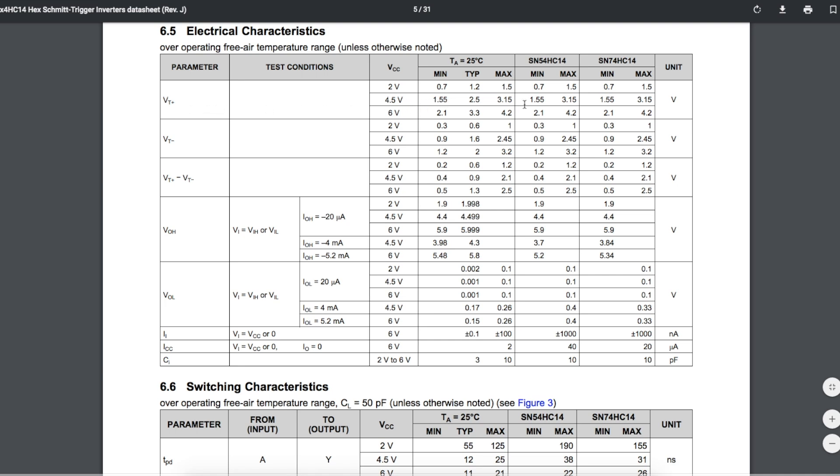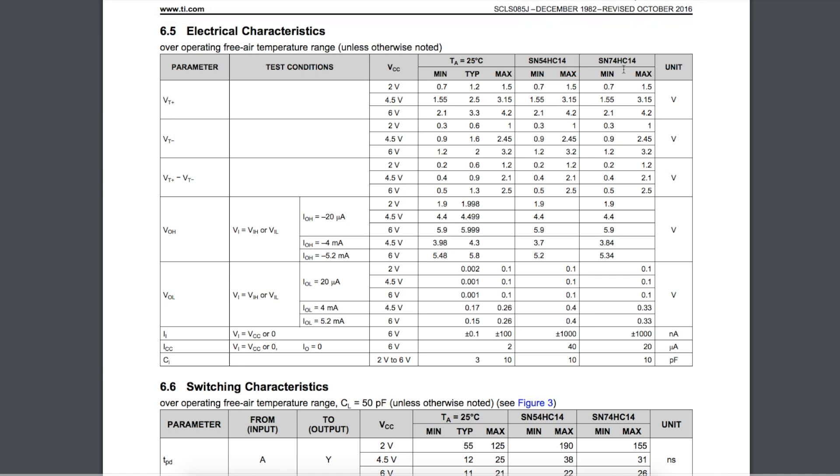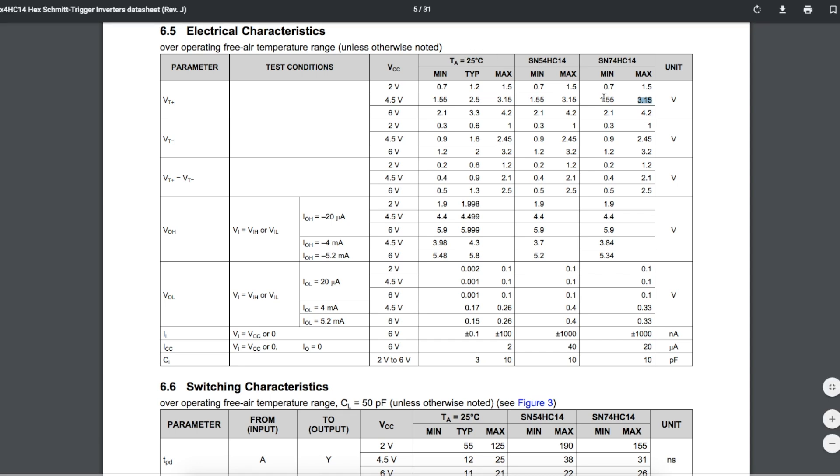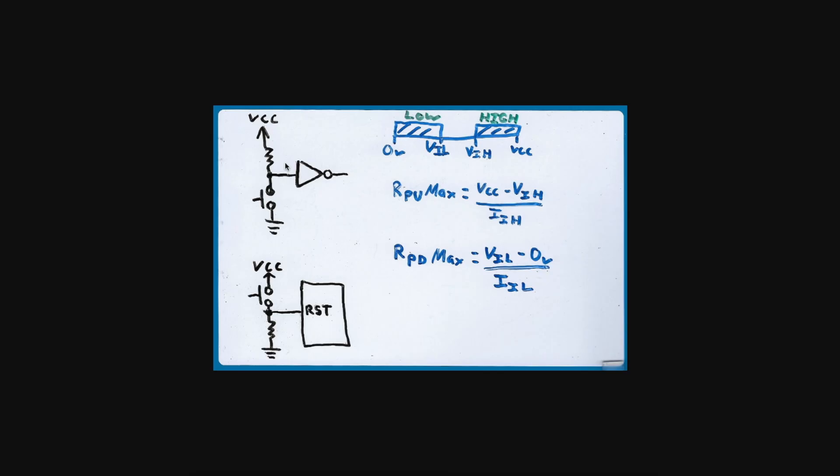the voltage level that will recognize as a guaranteed logic high for 74HC would be 3.15 volts. Depending on the part and depending on the operating temperature, an input that is 1.55 volts may register as a logic high, but for sure when you get to 3.15 it should see a logic high. So for a pull-up, this needs to be at least 3.15 volts.